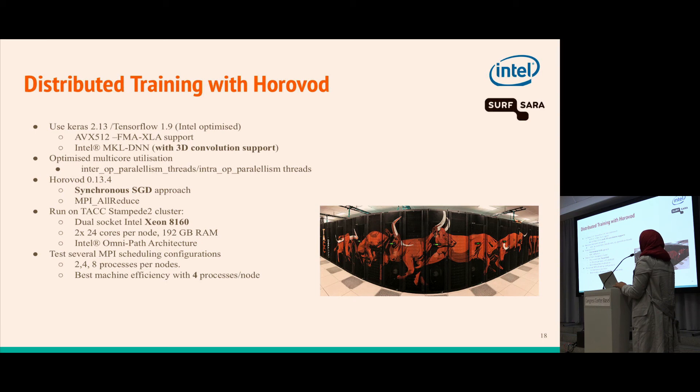There was another effort with training using Horovod. For this implementation we used Intel optimized TensorFlow 1.9 with AVX-512 instructions and MKLDNN with 3D convolutional support. To get the best from the number of cores, the inter and intra parallel threads were set accordingly. We used Horovod and the synchronous SGD approach.